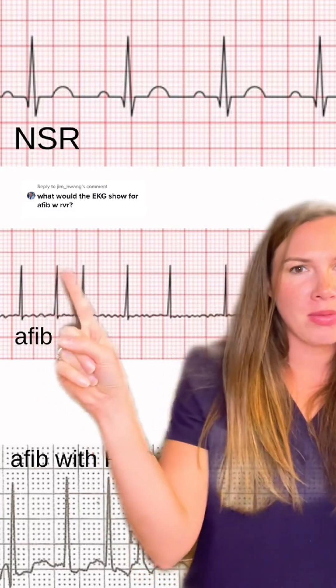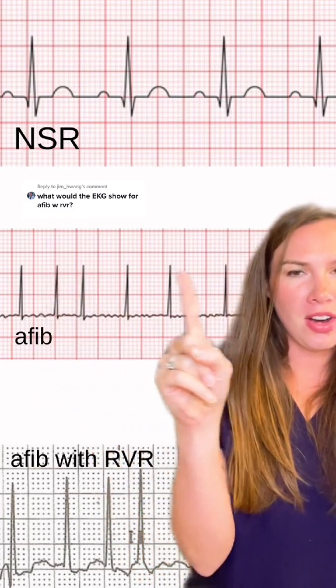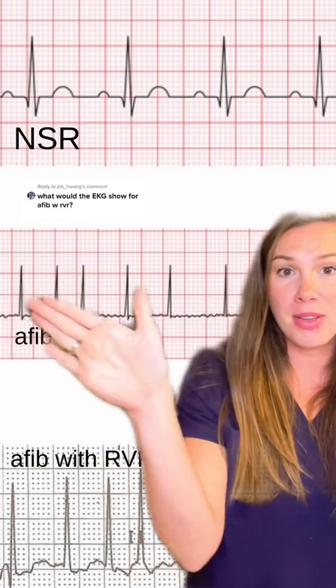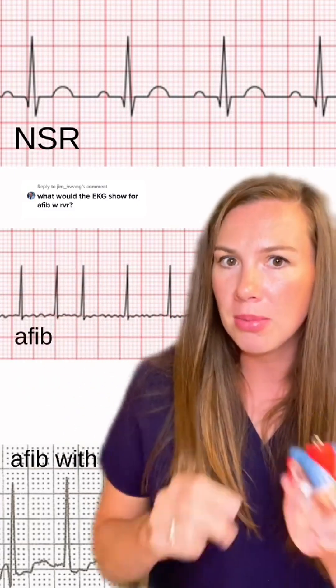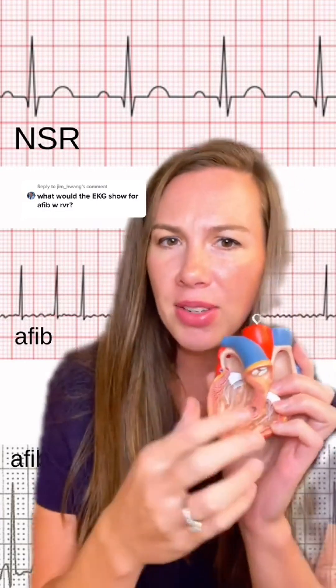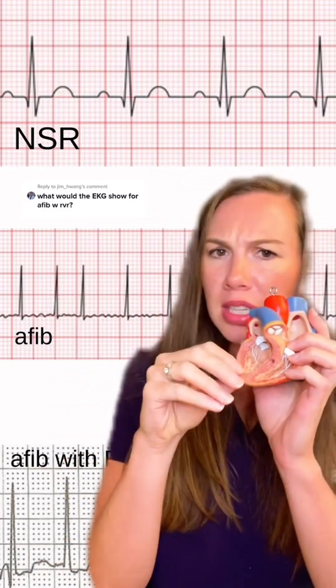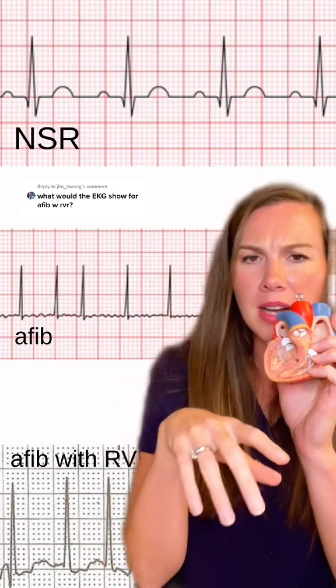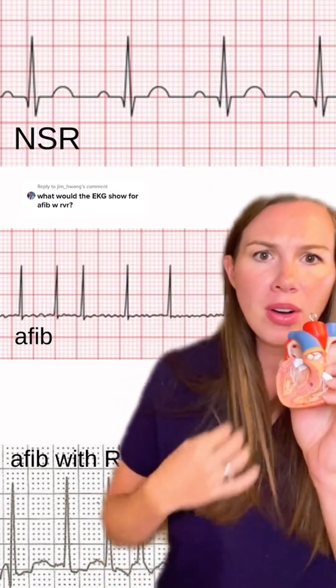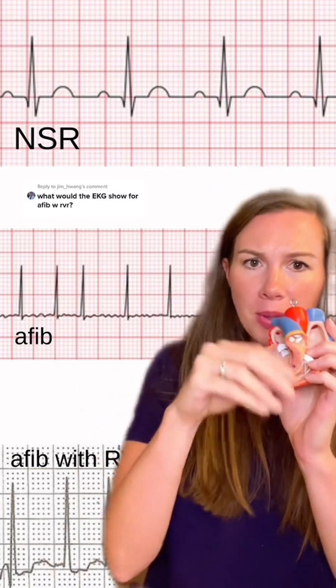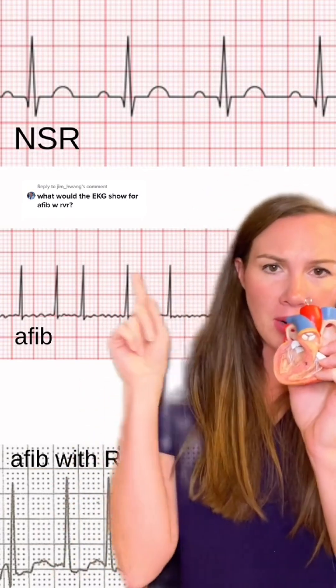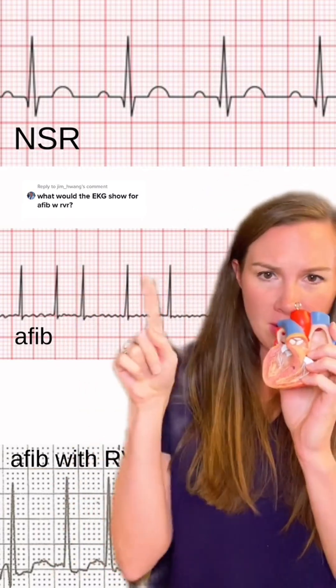We notice we don't have a regular R-to-R interval. AFib is always an irregular rhythm because the AV node is just letting some of those QRS impulses through — just some of those.